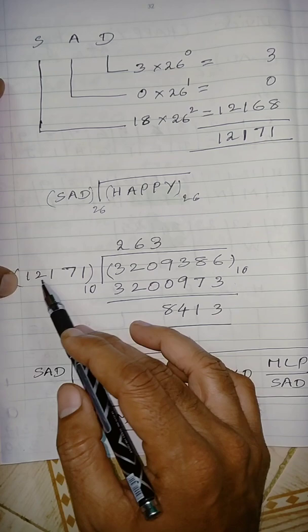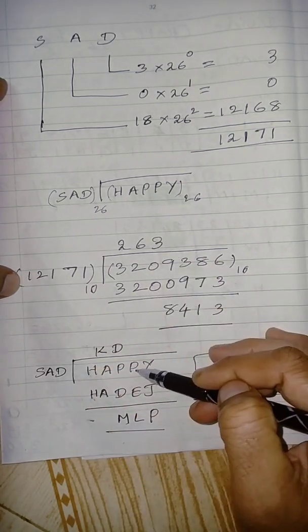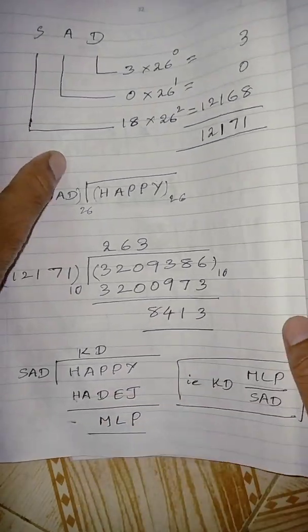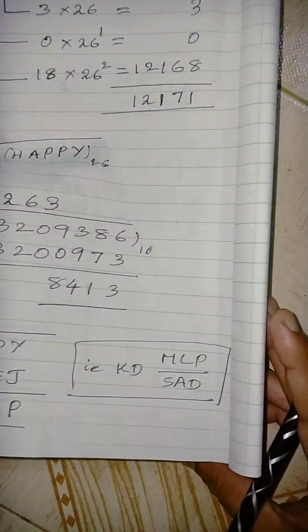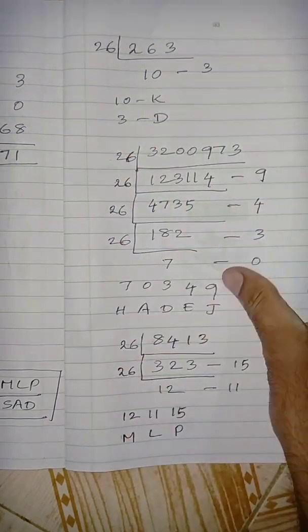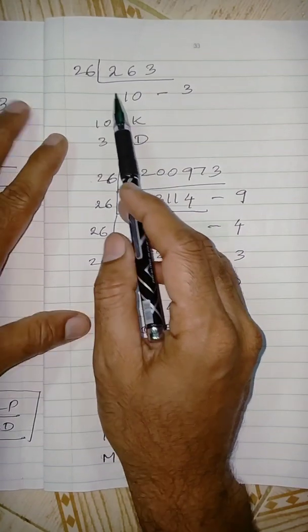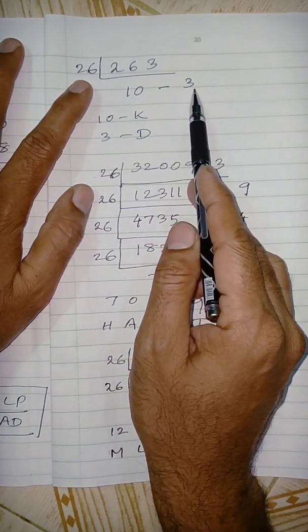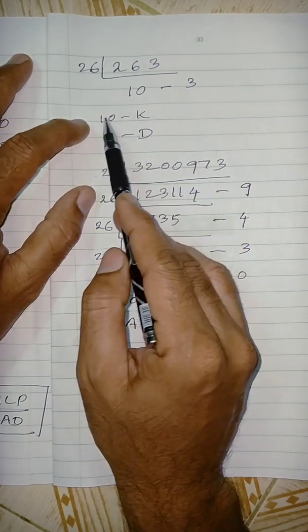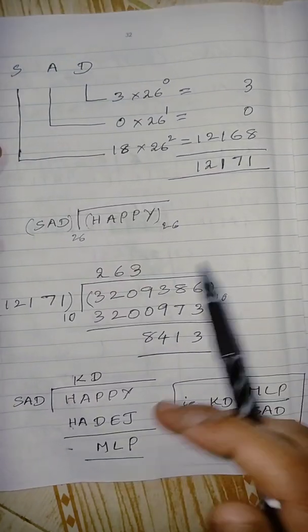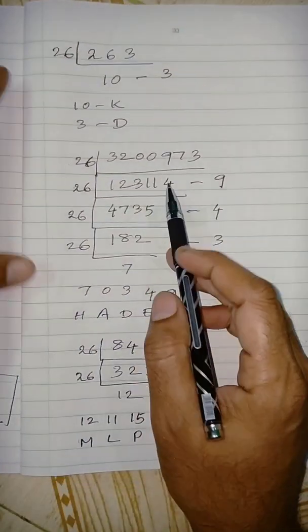Now we know 12,171 is SAD and this quotient is HAPPY. 263 — to convert this quotient from base 10 to base 26, we divide by 26. 263 divided by 26: quotient 10, remainder 3. So 10 corresponds to label K, and 3 corresponds to D. So the quotient in base 26 is KD.